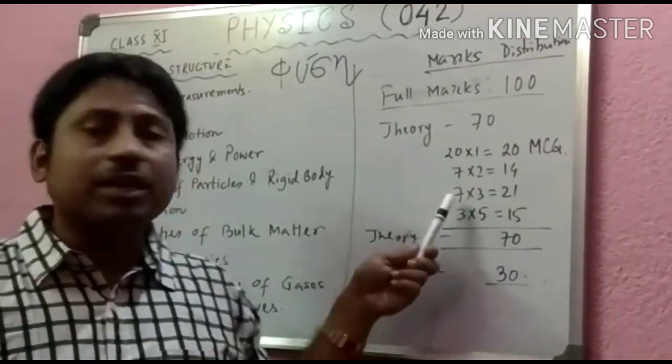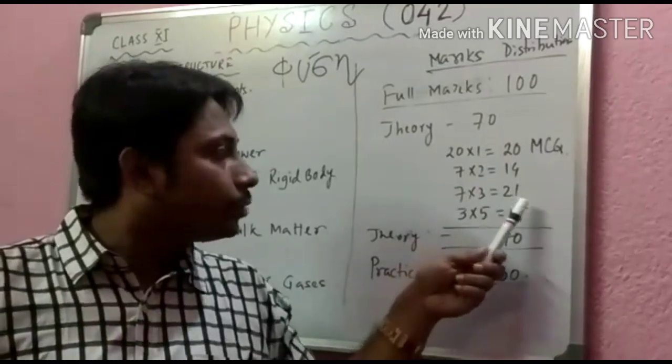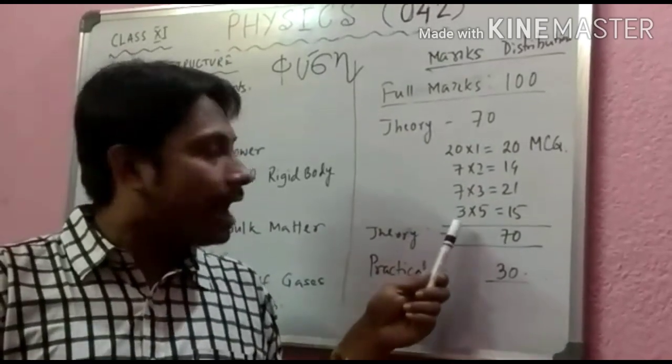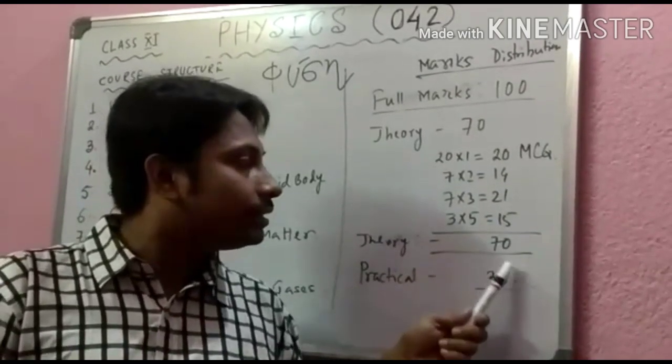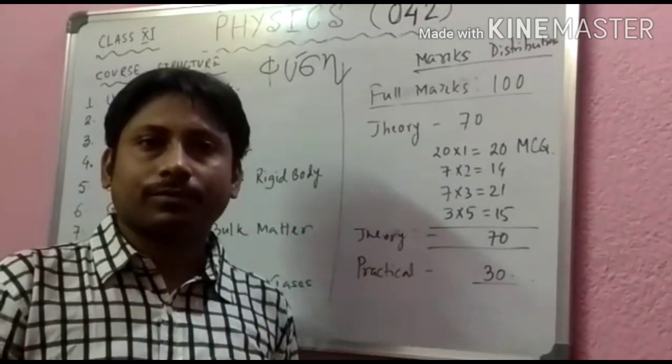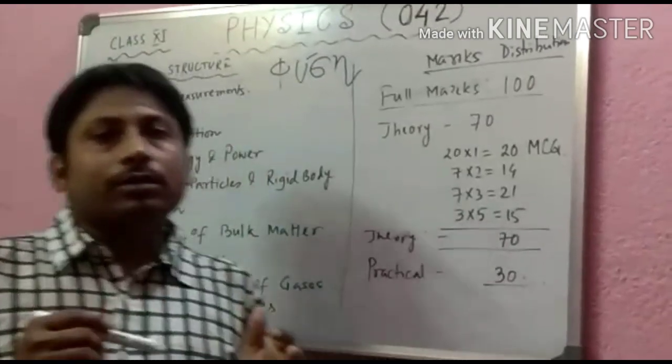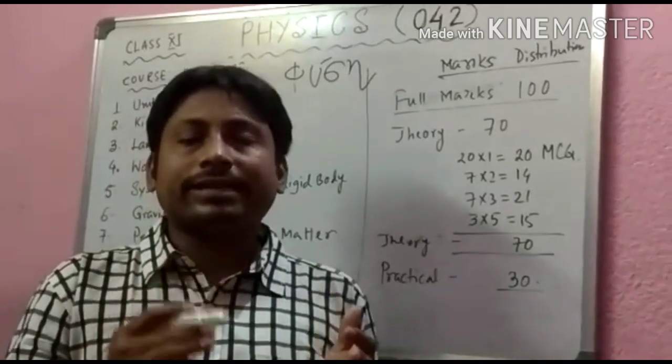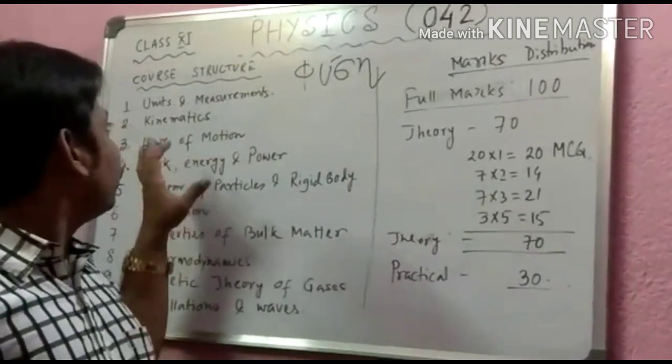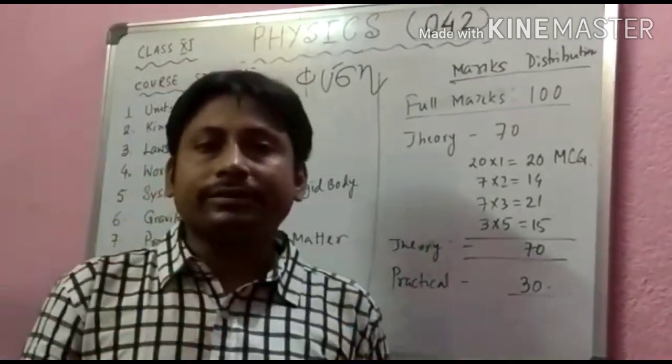Seven two marks questions equals 14, seven three marks questions equals 21, and three five marks questions equals 15. So total 70. In next video I will discuss about the first chapter means Units and Measurement.